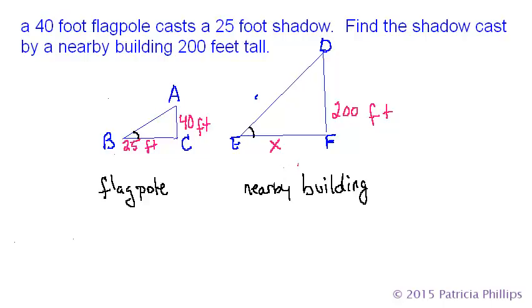But here's the deal with triangles. All triangles are 180 degrees. So you don't have to prove that all three angles are congruent. All you need to prove is that two of the angles on these triangles are congruent.